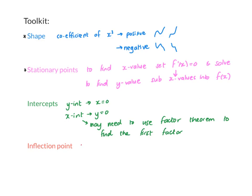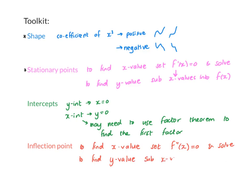Finally, if you need to find the inflection point, you'll find this where the second derivative is zero. It's a place where the graph changes concavity, either from concave up to concave down or the other way around. You find the second derivative, set it equal to zero to find your x value, and then substitute that x value into the original equation to find the y value.